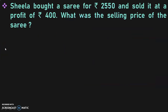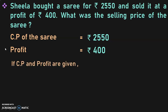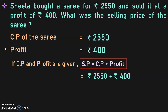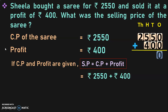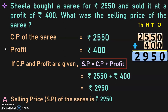Sheila bought a saree for rupees 2550 and sold it at a profit of rupees 400. What was the selling price of the saree? Cost price of the saree is rupees 2550. Profit is rupees 400. Since cost price and profit are given, selling price equals cost price plus profit: 2550 plus 400 equals 2950. The selling price of the saree is rupees 2950.